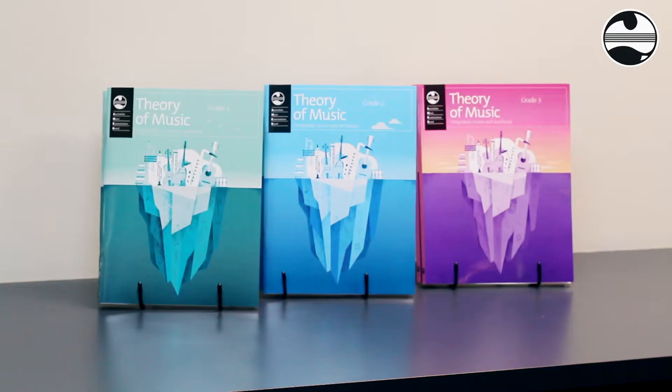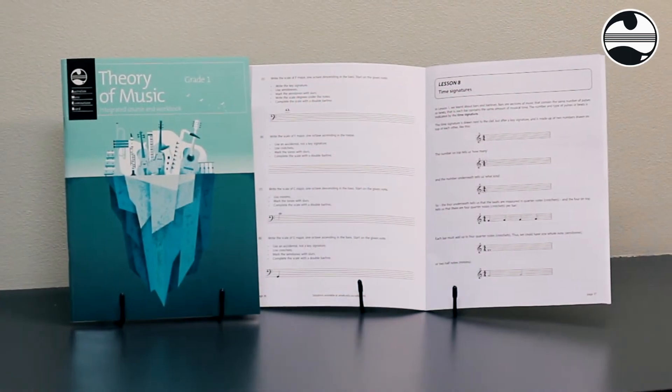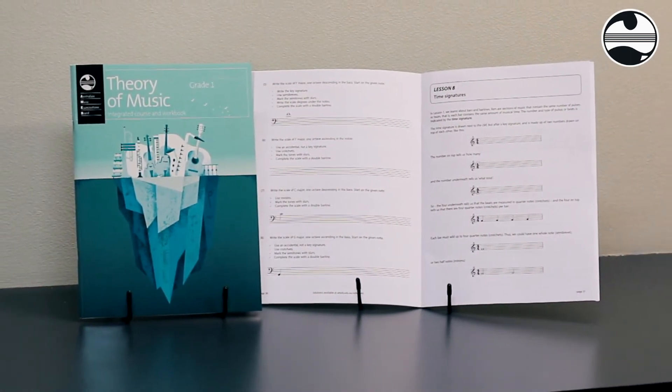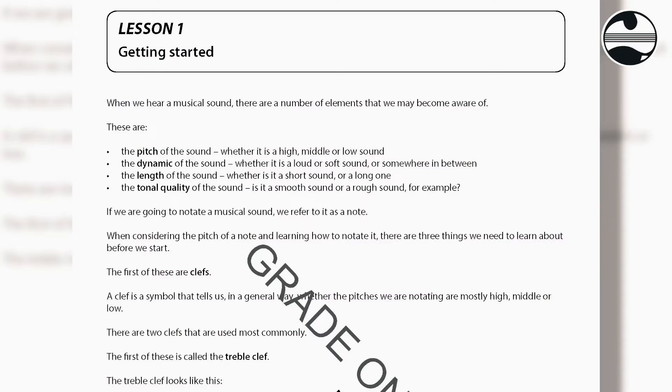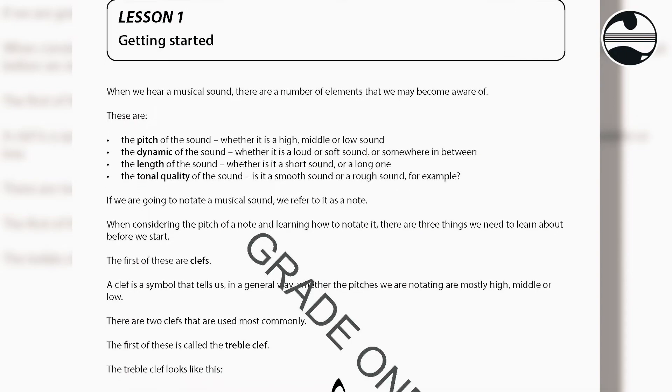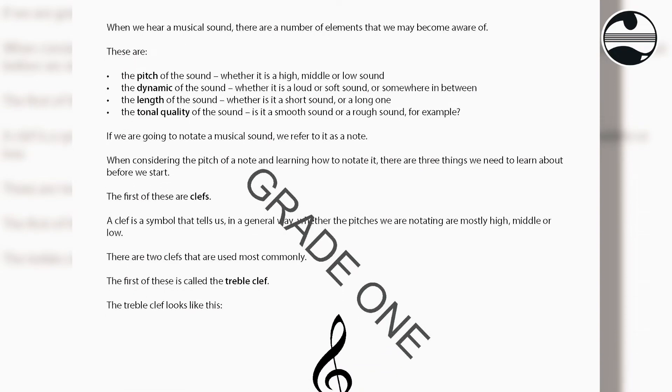The books are structured in a number of chapters that correlate very closely to the theory syllabuses. Each chapter includes a series of questions, also revision questions from previous chapters, and then at the end of the book we've included a past AMEB exam paper, so candidates who want to do an exam can do an actual written exam from our past papers.